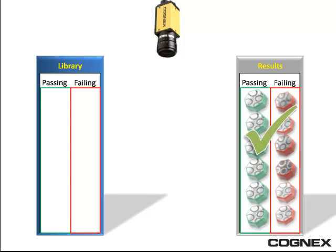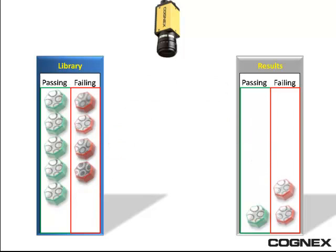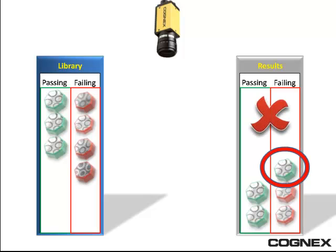Any deviation of these known images from their defined pass/fail status will immediately be flagged. This tells you there's a problem with an inspection parameter and allows you to correct it before running the system on a live production line.